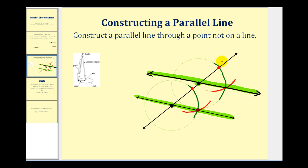If you're wondering why this construction actually worked, remember that the corresponding angles of two parallel lines cut by a transversal are congruent. So by sketching this line, we were able to copy this angle up here, making the corresponding angles congruent and therefore making the two lines parallel. I hope you found this helpful. Thank you for watching.